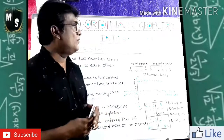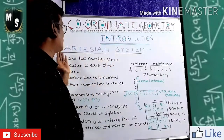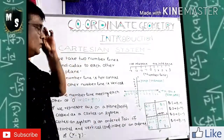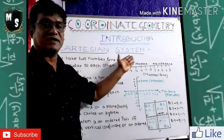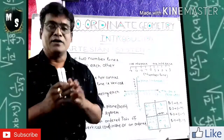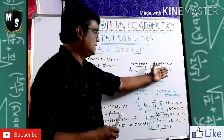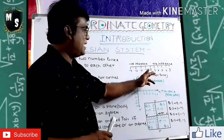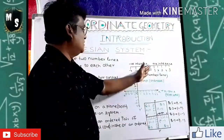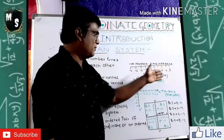In the introduction part, I took a Cartesian system. Before talking about the Cartesian system, let us go for a number line. See the number line: zero is in the middle, and one, two, three, four — positive integers on the right-hand side of zero and negative integers on the left-hand side of zero. So it is called a number line.